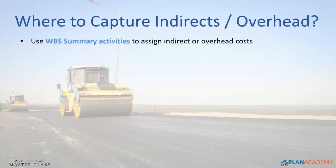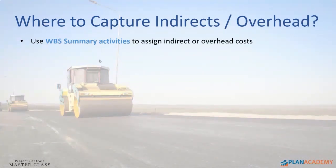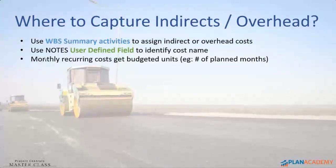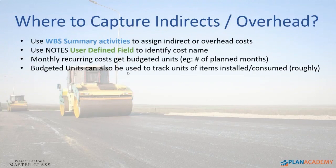Where to capture indirect and overhead information. Some costs are indirect and we have overhead — we will use WBS summaries for those. I used basically two or three WBS summaries in the whole entire project with no relationships. I also used a user-defined field notes to identify the cost name. Monthly reoccurring costs can have a budgeted unit associated with them — I'll show you what that looks like.